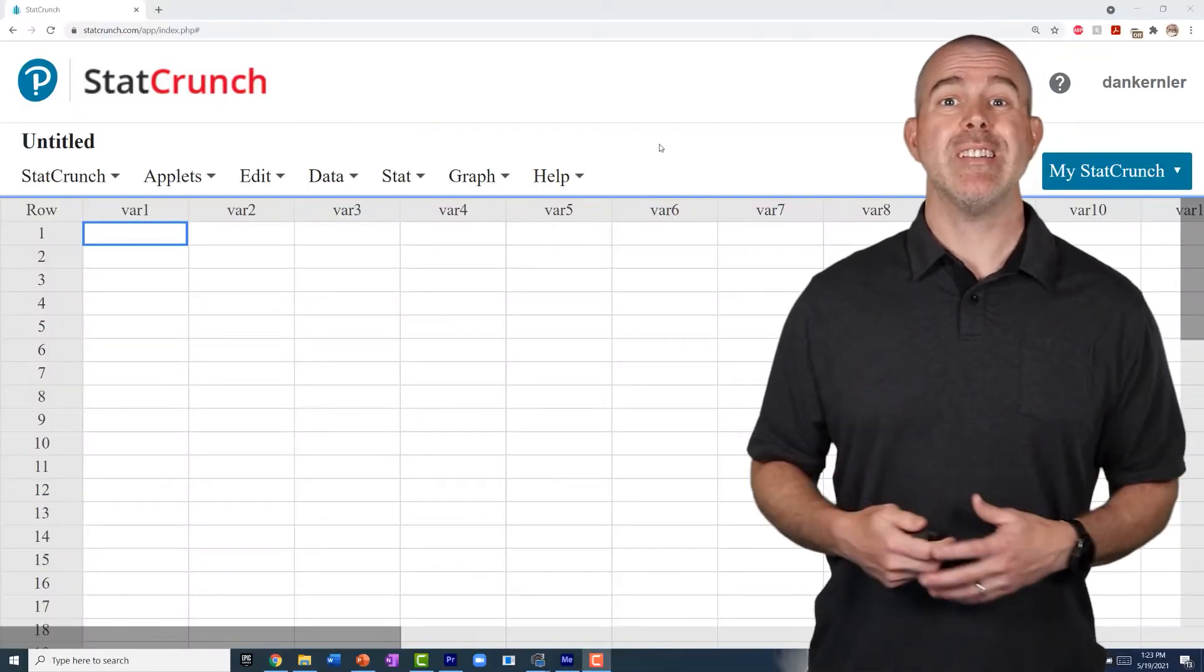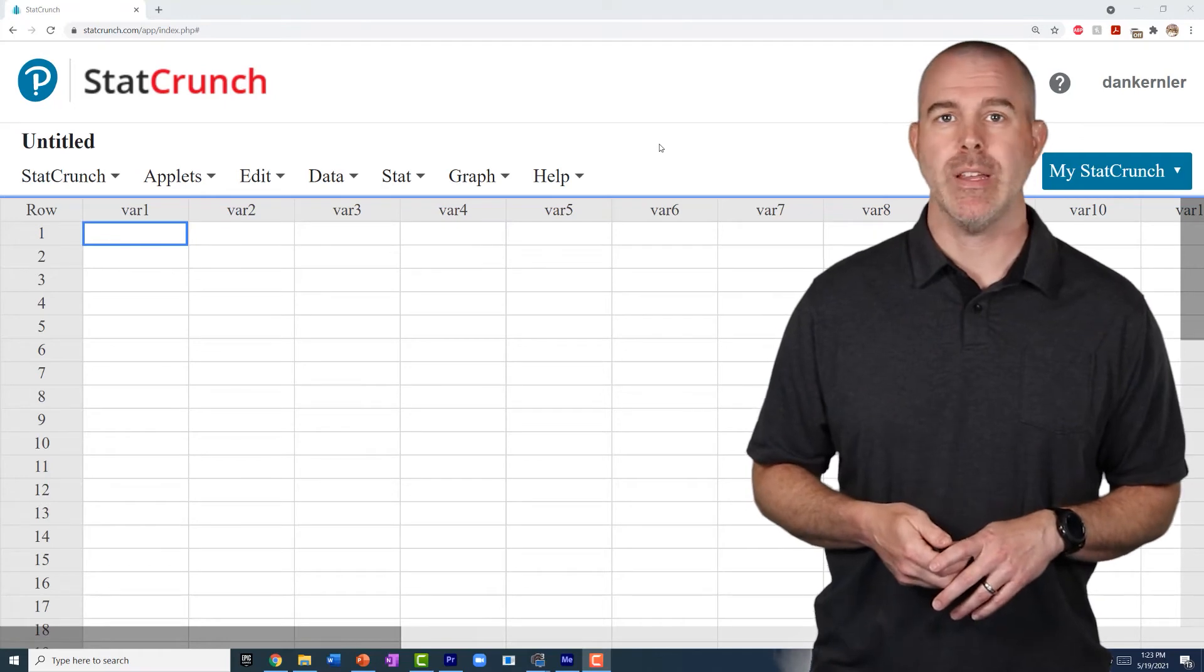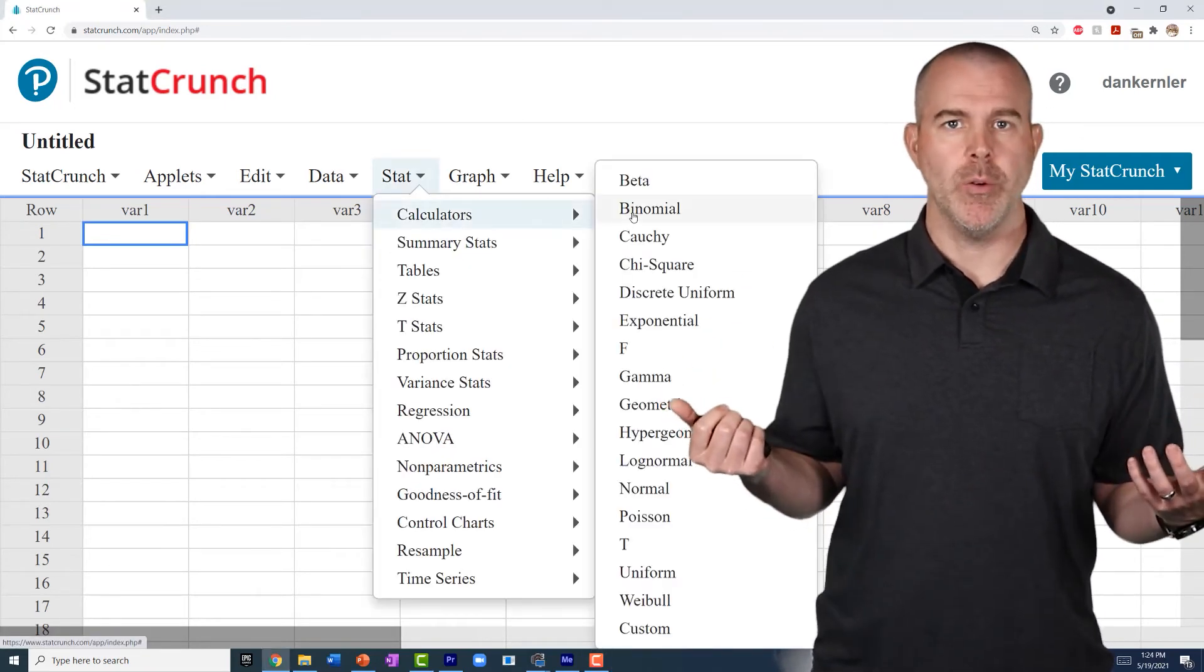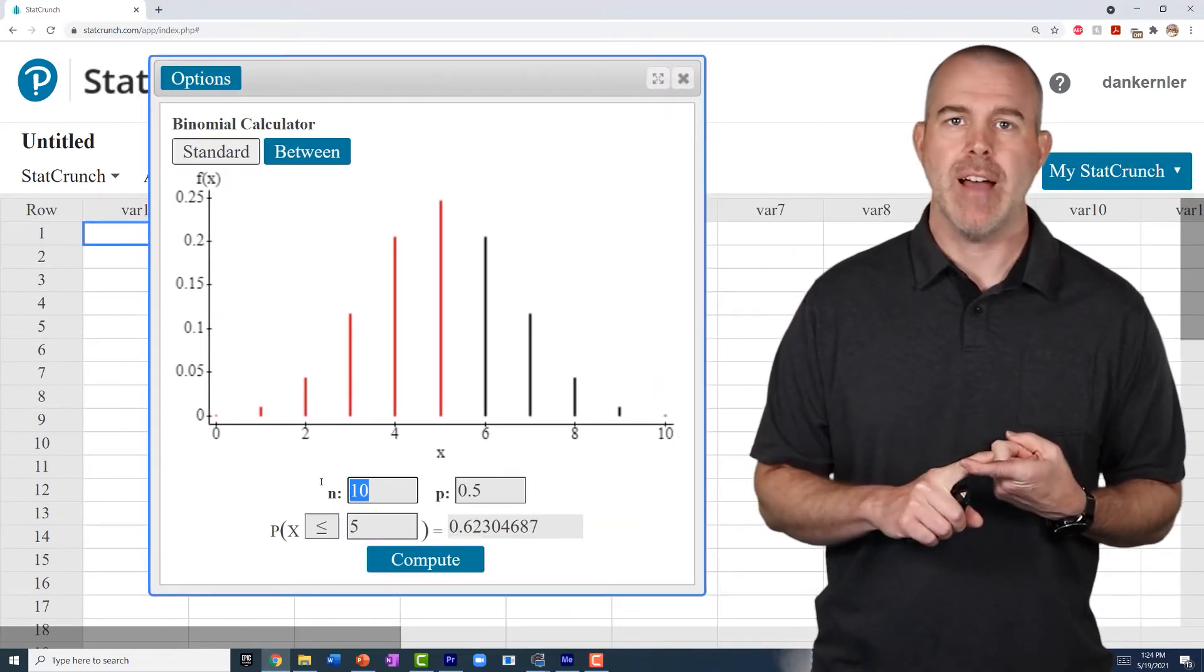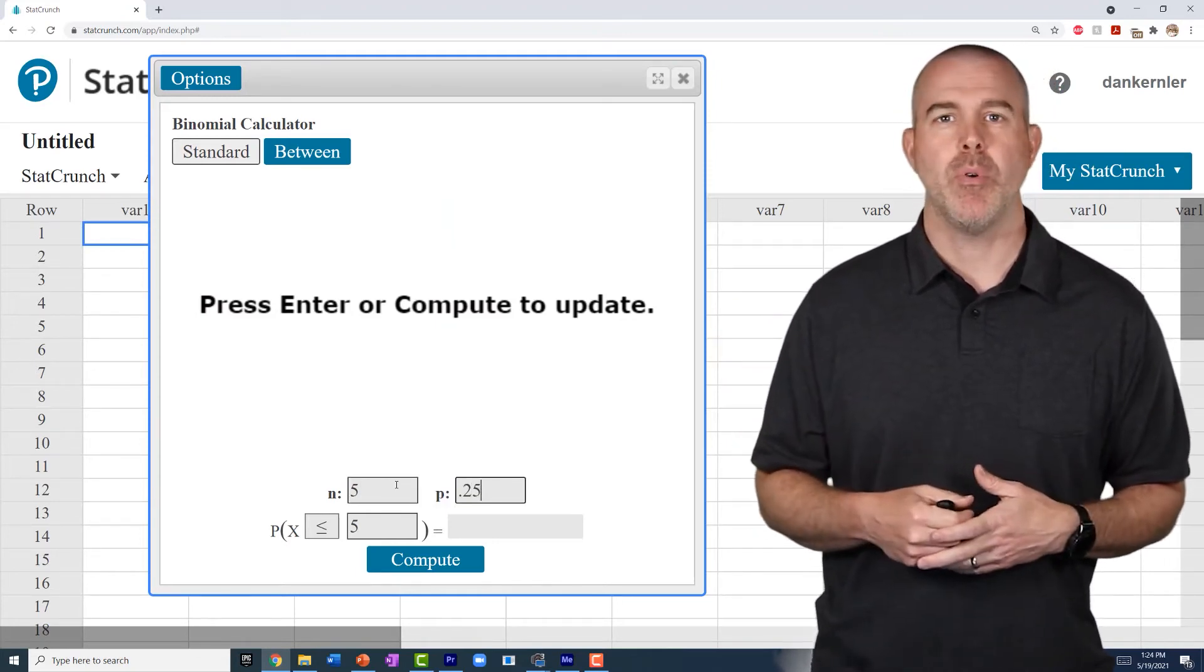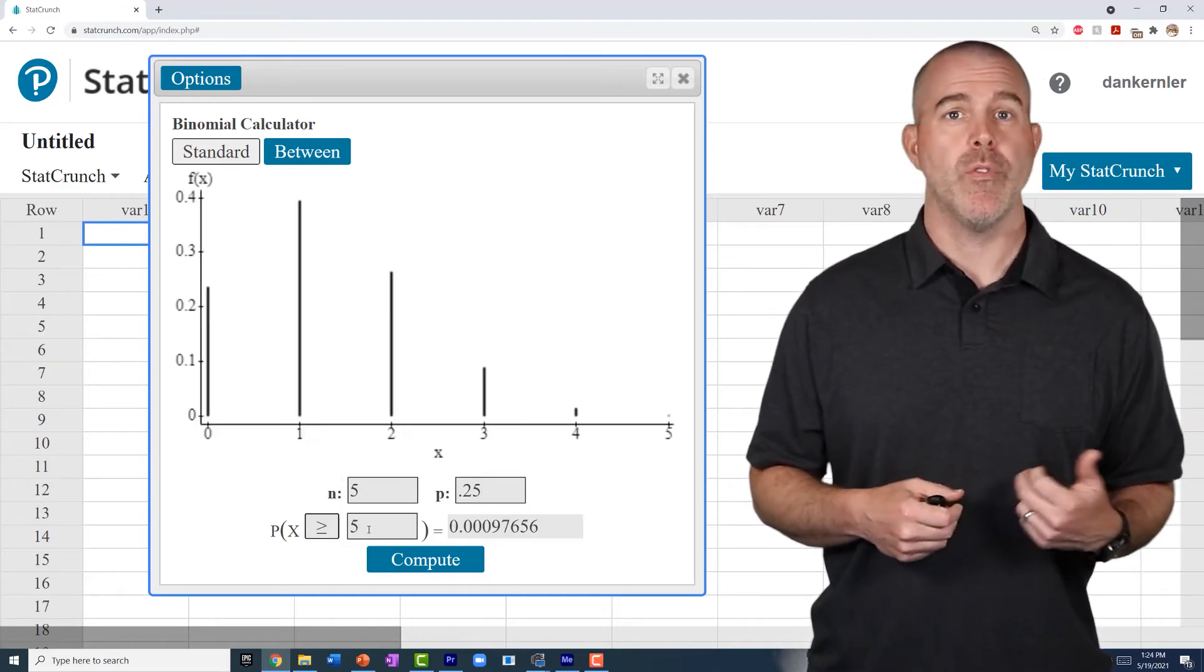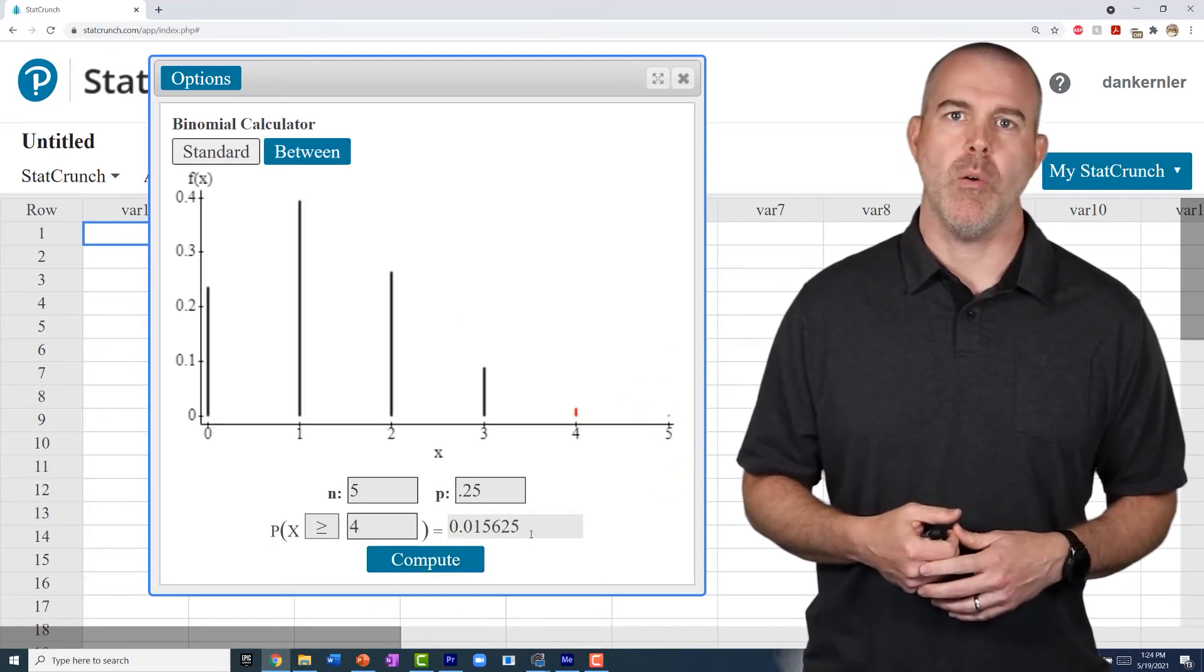In StatCrunch, this is actually fairly simple. There's a whole menu of probability calculators. It's under Stat, Calculators, and then we're going to choose Binomial. You just have to enter in all your characteristics. So we have n, five trials. We have p, probability of success, one-fourth, 0.25. You can actually do one divided by four if you wanted to. I did 0.25. We want to find the probability of being greater than or equal to four. Hit compute. Same thing, 0.0156.